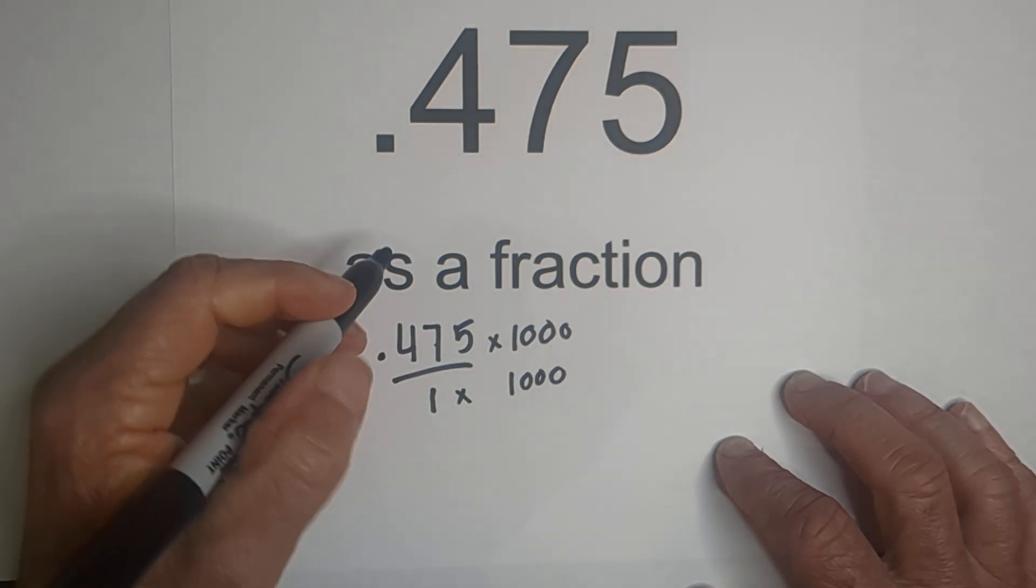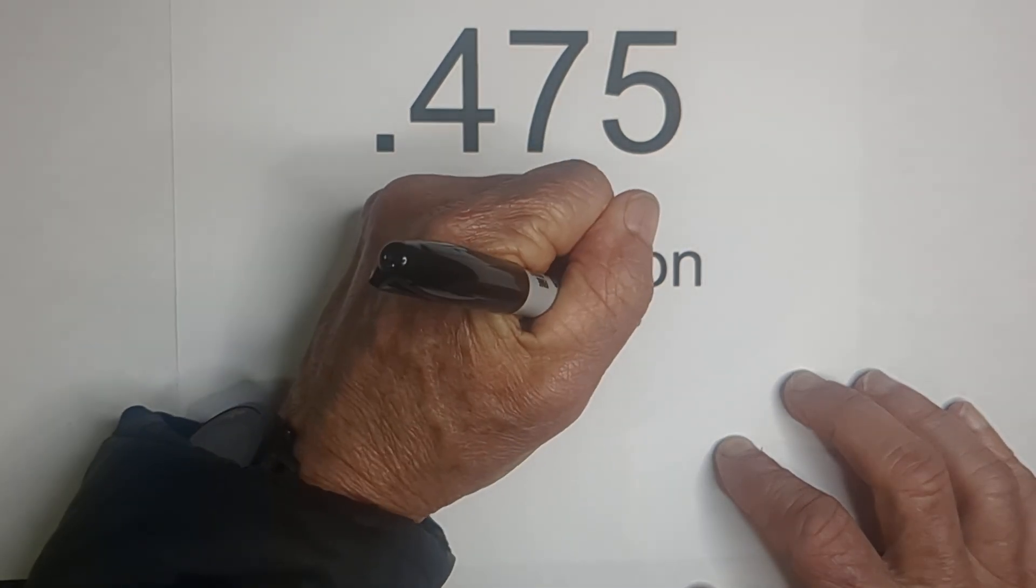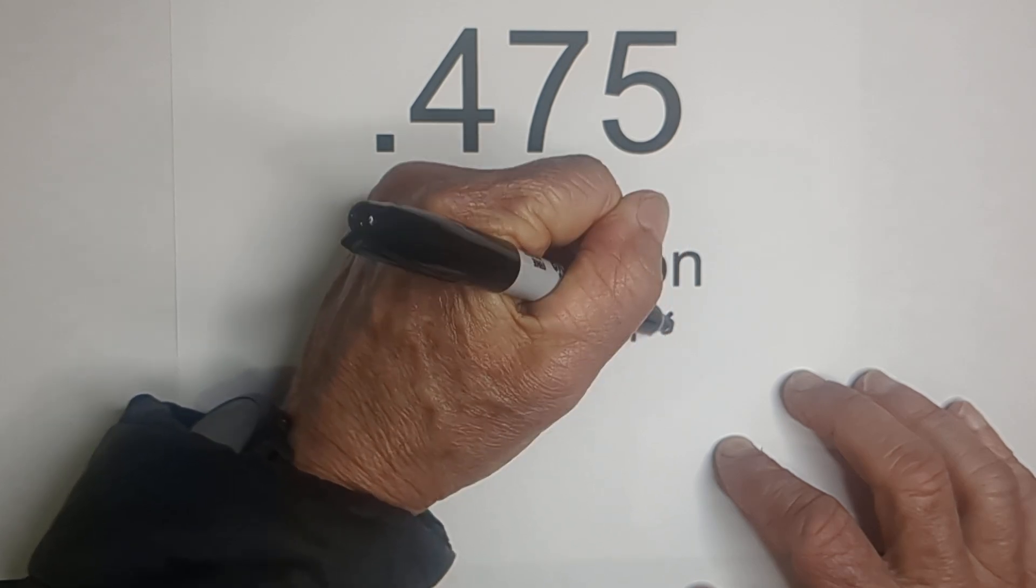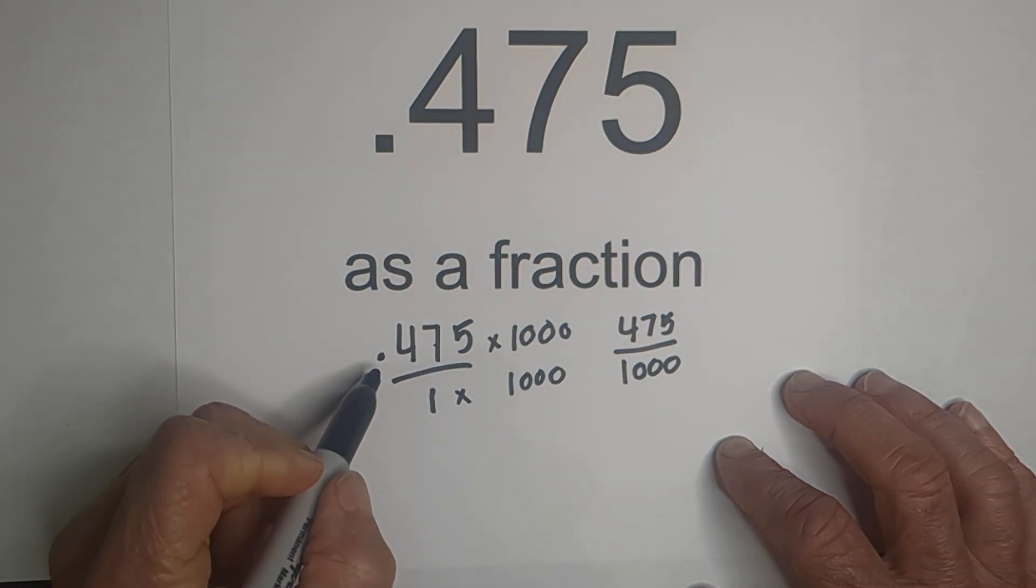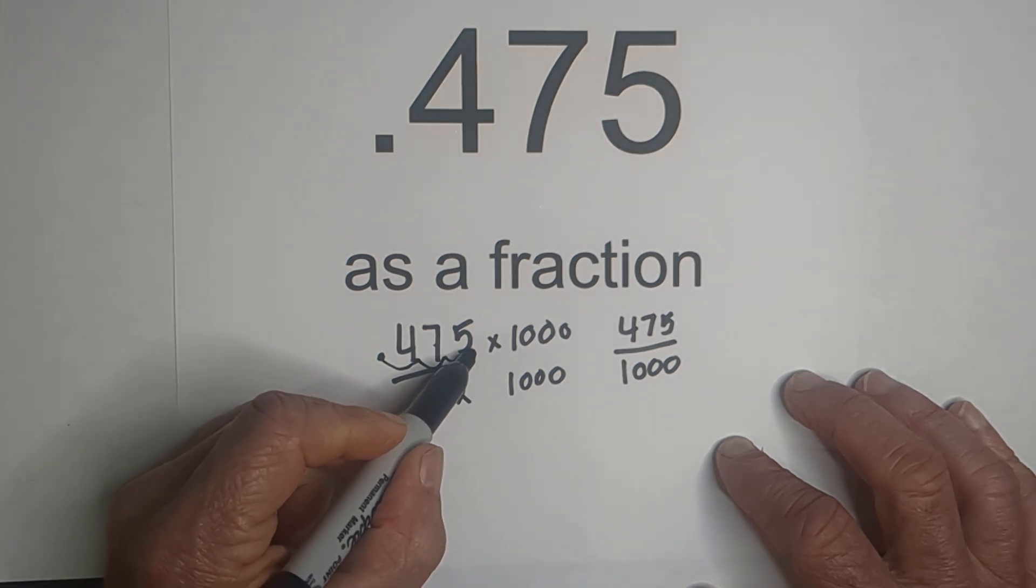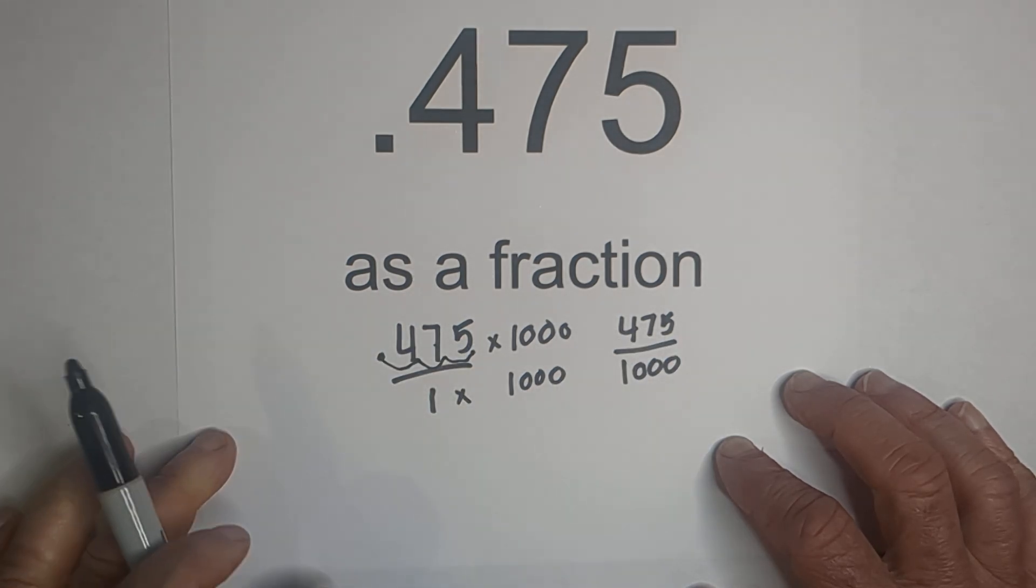So when I do that, that gives us 475 over 1,000 because I move the decimal 1, 2, 3 places and that gives you 475.